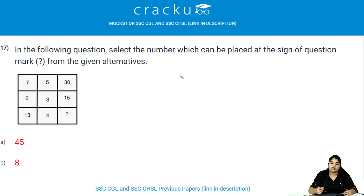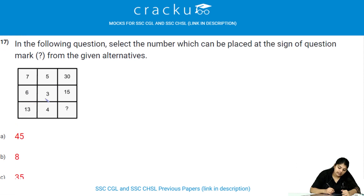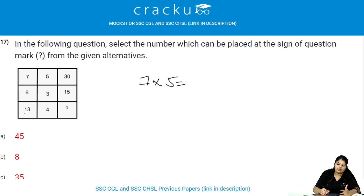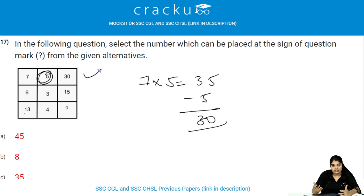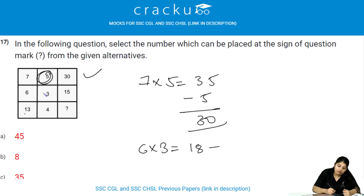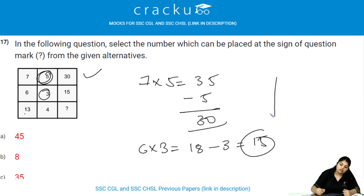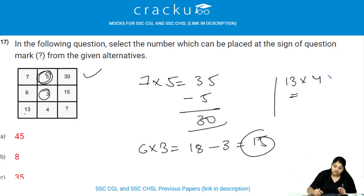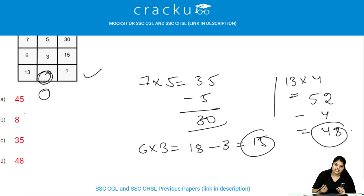Select the number which can replace the question mark. Given: 7, 5 → 30; 6, 3 → 15; 13, 4 → ? The pattern is: multiply the two numbers then subtract the second number. 7 × 5 = 35, 35 − 5 = 30. And 6 × 3 = 18, 18 − 3 = 15. So for 13 and 4: 13 × 4 = 52, 52 − 4 = 48. Therefore, the answer is option D, 48.